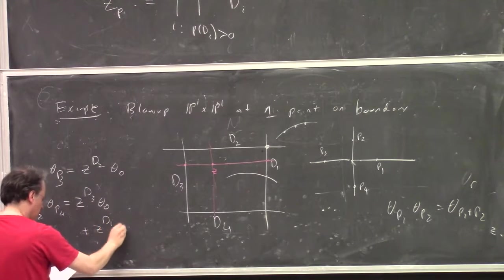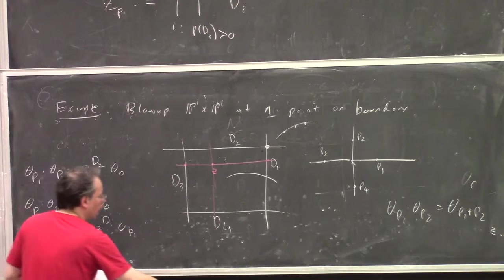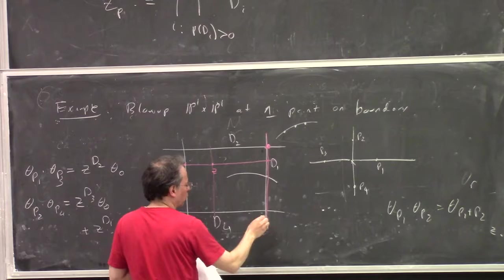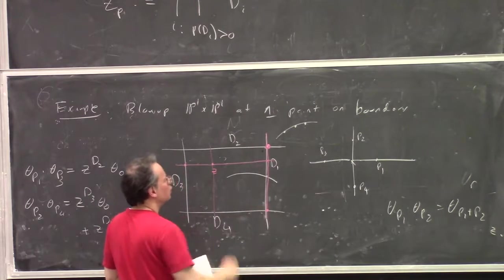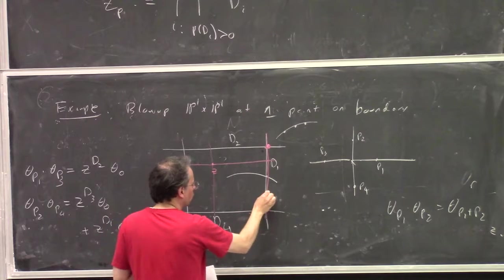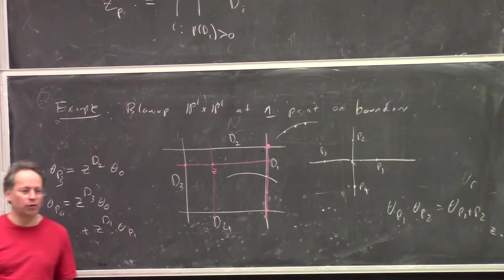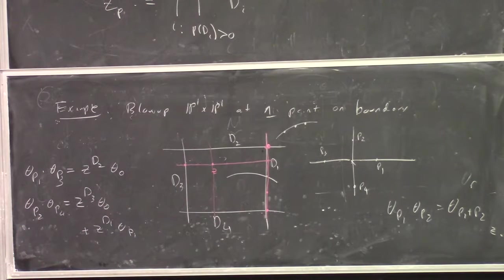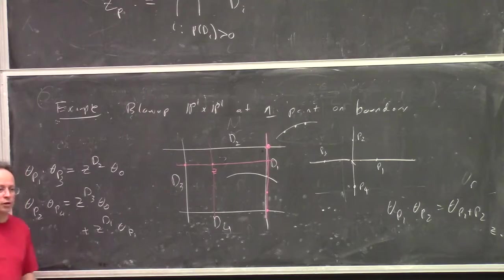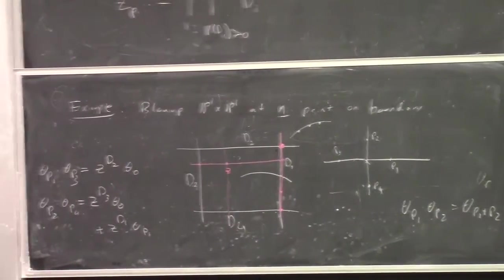Now, it turns out that if you're interested in saying just multiplying theta_{D_1} times theta_{D_2}, that just behaves like monomials. So theta_{D_1} times theta_{D_2} is just theta_{D_1 + D_2}. And that comes from constant maps. It's somewhat more interesting to calculate theta_{D_1} times theta_{D_3}.